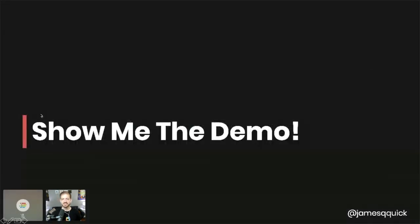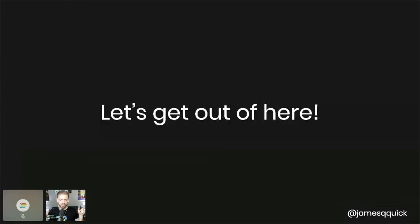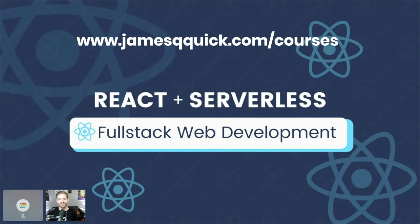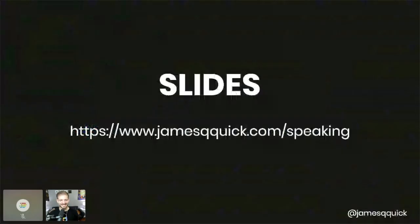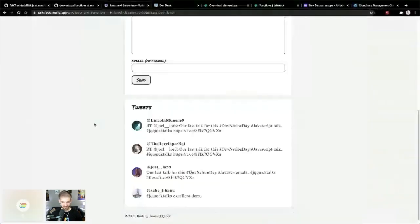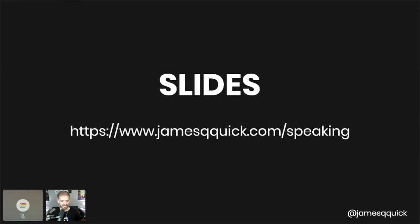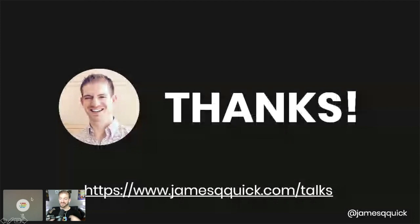Let me wrap up. If anyone tweeted with the hashtag jqquictalks, I wanted to show an example of getting data dynamically in a static site from a serverless function to display relevant tweets — and we got a couple! That shows this is a Gatsby static site making a dynamic call to a serverless function to get a list of tweets. Static sites do not equal static experiences. I have a React and Serverless course at jamesqquick.com/courses that covers building a full-stack application with Auth0, access tokens, authorization, and deploying to Netlify.